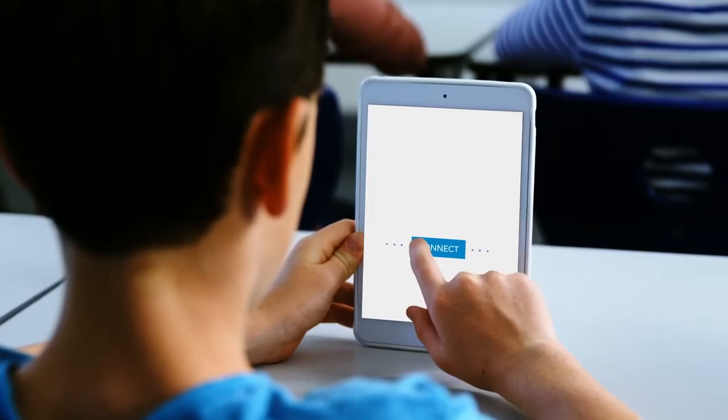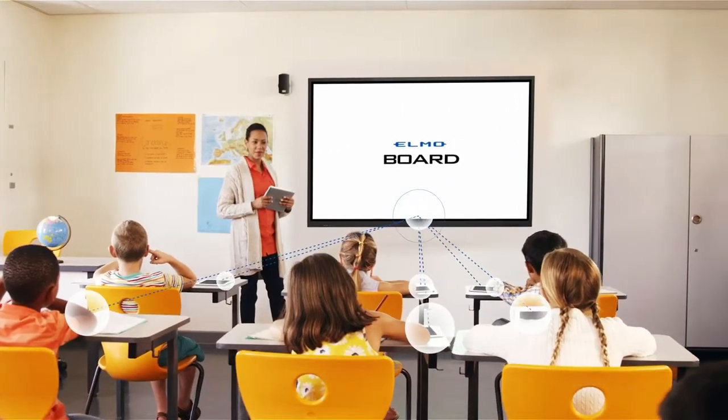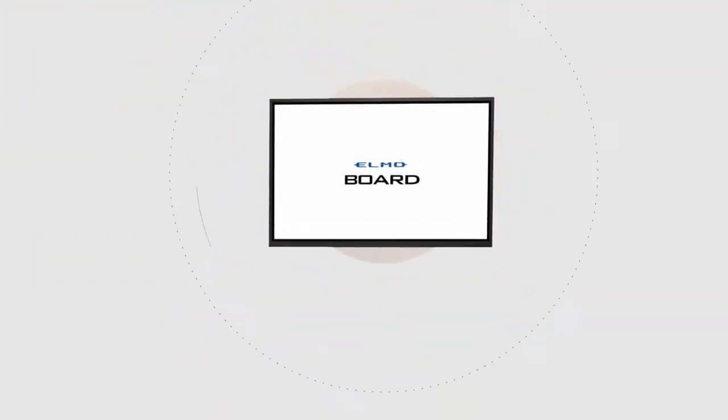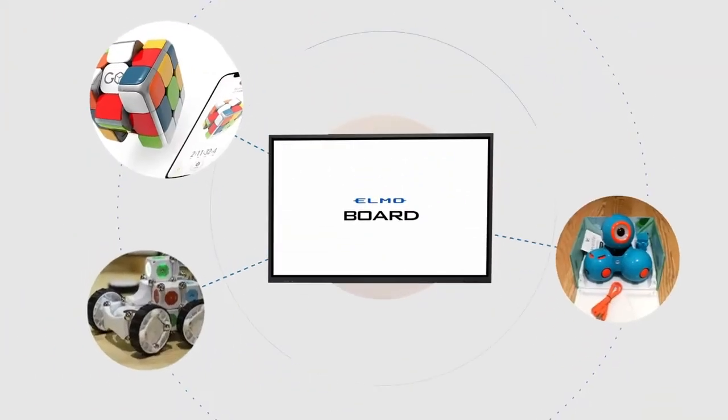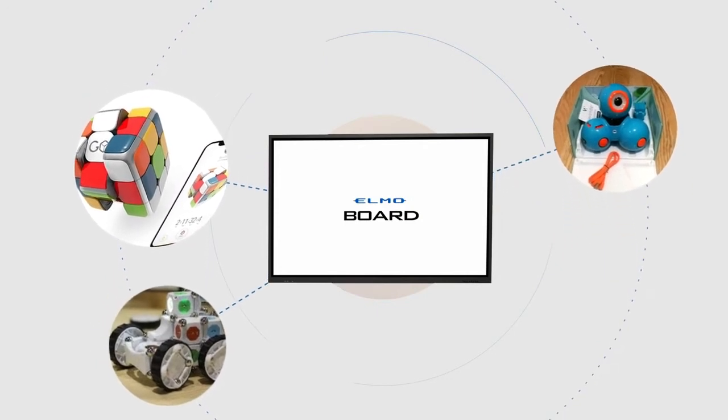With built-in Wi-Fi, the ELMO Board can connect to the internet or even serve as an access point that other devices can connect to. The ELMO Board's built-in Bluetooth function allows for easy connectivity to STEM devices like robots and lab sensors.